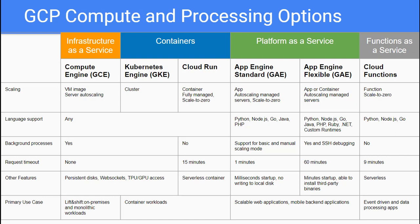I summarized the compute options decision tree with keywords and use cases for you to easily remember for the exam. You can find the details of the comparison among GCP compute and processing options in my blog. I include Google Cloud Run in this table even though I didn't have any questions on it in my exam, but since Cloud Run went GA at the end of 2019, I think you will start to see it in the exam. Cloud Run offers a native serverless experience that lets you go from container to URL within seconds for increased developer velocity — the keyword is serverless container.